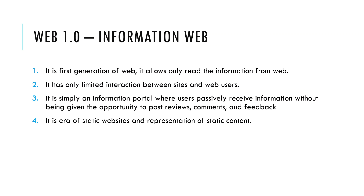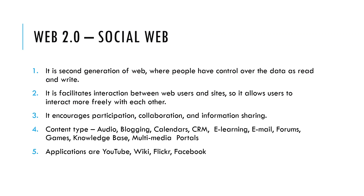Web 1.0 is an era of static websites and the representation of static content, not dynamic information. The next generation, Web 2.0, is called the Social Web. It is the second generation of the web where people have control over data with read and write capability, facilitating interaction between web users and sites.